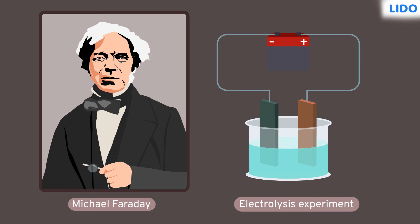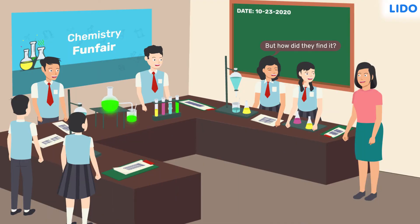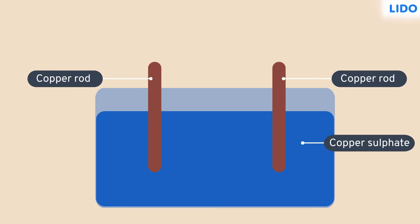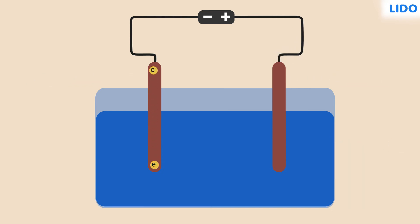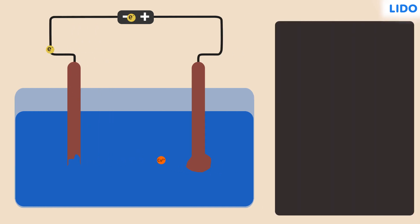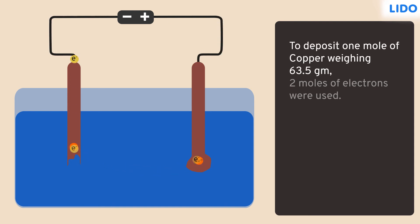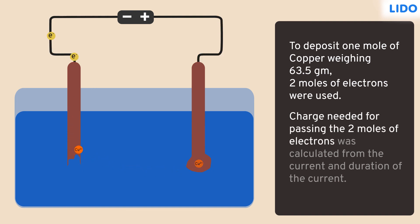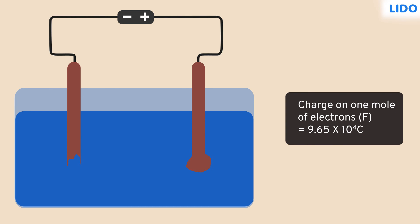Faraday had conducted an electrolysis experiment and calculated the charge on 1 mole of electrons. Neha got curious and asked, 'But how did they find it?' Rina ma'am replied, 'By doing a simple experiment. He dipped two copper rods in a solution of copper sulfate and passed a current through it. Due to the current, copper on one side carried the charge to the other side to complete the circuit. Copper on one side was reduced and on the other side it increased. For every two electrons, one copper atom was deposited on the rod — simply speaking, one mole of copper weighing 63.5 grams was deposited.'